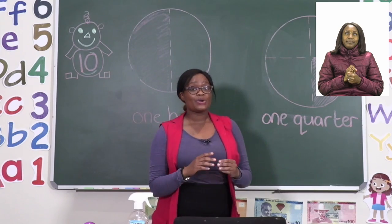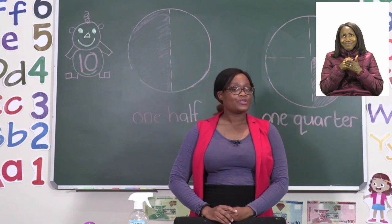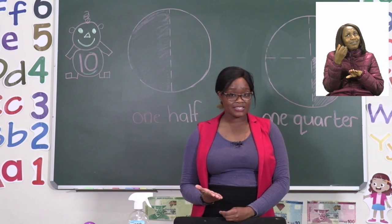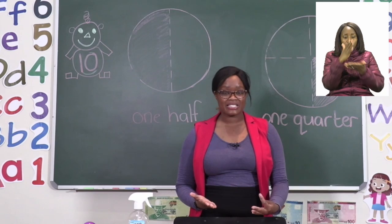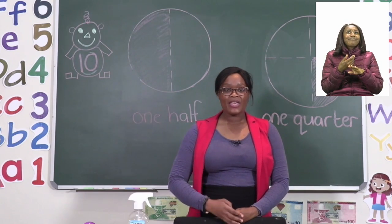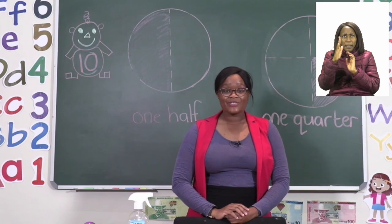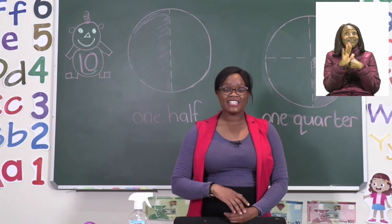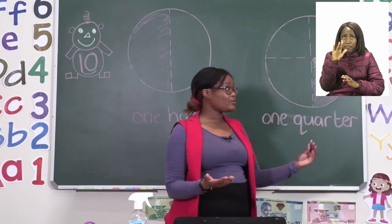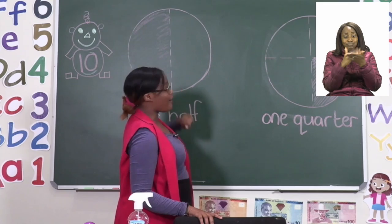So go ahead and try your exercise. From the examples given, you can see what a half looks like and what a quarter looks like. Take your time, spell each word correctly, and when you're done, check by saying it out loud. Don't forget — one quarter is just half of a half.